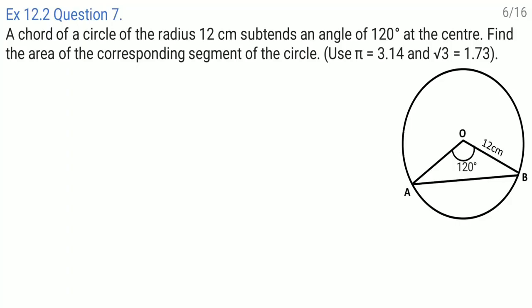Question number 7: A chord of a circle of radius 12 centimeter subtends an angle of 120 degree at the center. Find the area of the corresponding segment of the circle. Use the value of pi as 3.14 and root 3 as 1.73. We need to find out the area of this region, which means area of the sector minus area of the triangle.